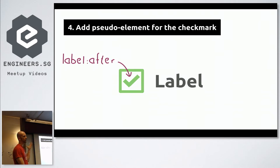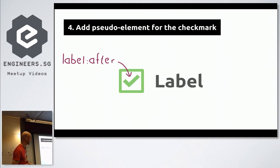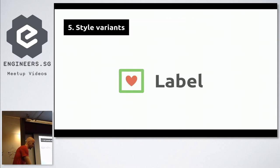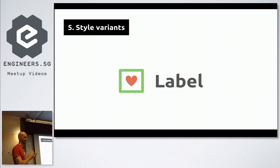Once that's done, we already have the two elements we need — the box and the check mark. Those are just two elements we can style any way we want. The last step is just to style up all the variants we listed, which are the seven.